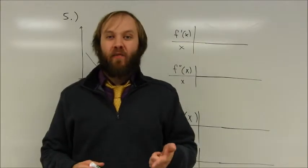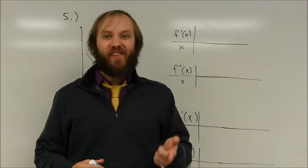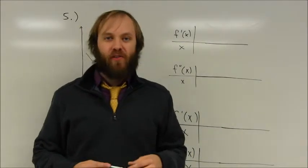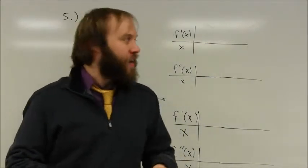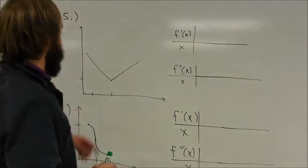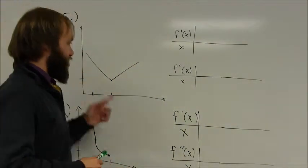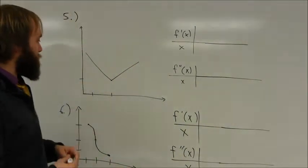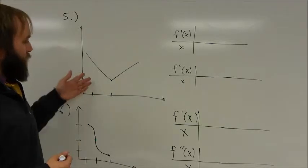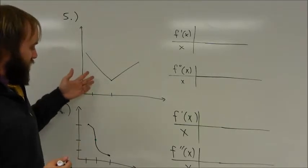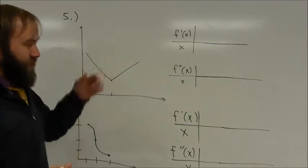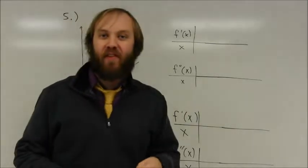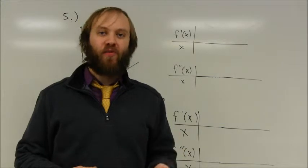In my first example, I'm going to look at questions 5 and 6 from Paul Forrester's calculus book — section 8.2. In these problems I'm being given graphs and I'm supposed to write the first and second derivative number lines for those graphs.